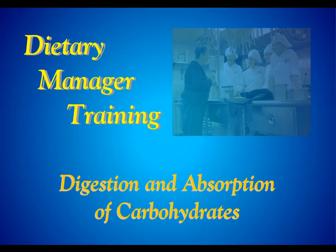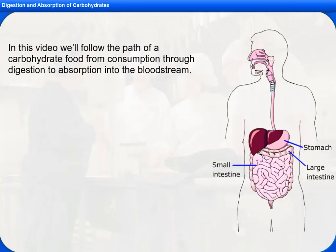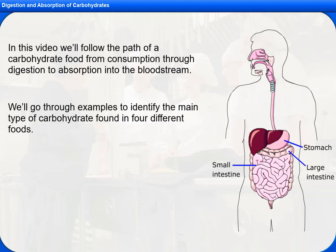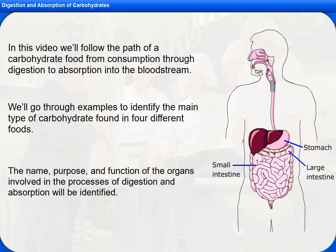Welcome to the video, Dietary Manager Training, Digestion and Absorption of Carbohydrates. In this video, we'll follow the path of a carbohydrate food from consumption through digestion to absorption into the bloodstream. We'll go through examples to identify the main type of carbohydrate found in four different foods, and identify the name, purpose, and function of the organs involved in the processes of digestion and absorption.